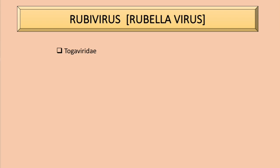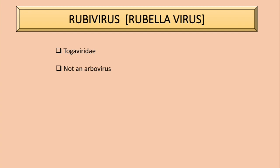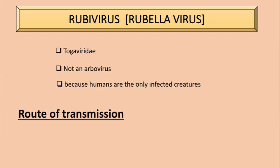It replicates in the cytoplasm. The Rubivirus is not an arbovirus because it only infects humans. Regarding mode of transmission, there are two main ways: firstly, respiratory secretions, and secondly, transplacental transmission.